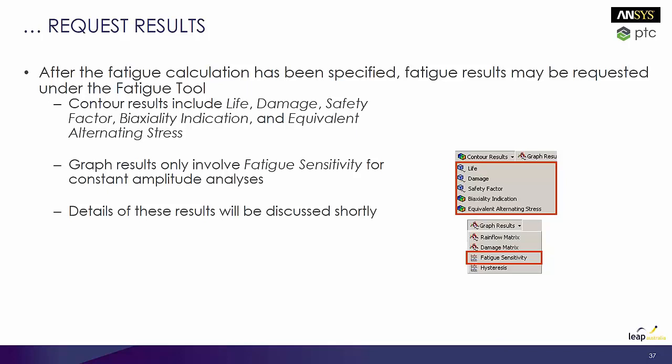With a fatigue calculation, you don't need to solve the model again — it's just a post-processing step. It's like checking whether equivalent stress is below yield. With the fatigue tool it's a little more involved: it goes back and looks up the stress-life curve, then plots a contour of life showing how many cycles the part will withstand. There are other outputs like equivalent alternating stress — particularly if you have a non-zero mean stress, your fatigue stress will be different to the stress used for static failure assessment.